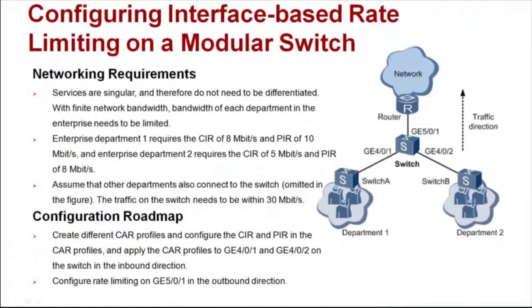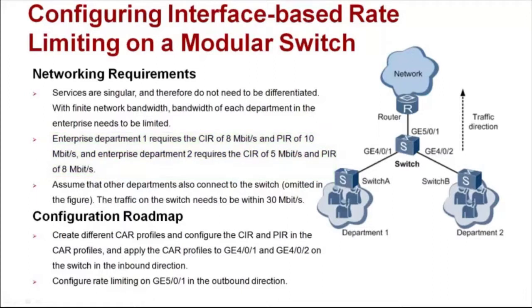Let's move to interface-based rate limiting on a modular switch. As shown in the figure, only data services are transmitted on the network. The bandwidth of each department needs to be limited. Enterprise Department 1 requires a CIR of 8 Mbps and PIR of 10 Mbps. Enterprise Department 2 requires a CIR of 5 Mbps and PIR of 8 Mbps. Other departments also connect to the switch, and the traffic needs to be within 30 Mbps.